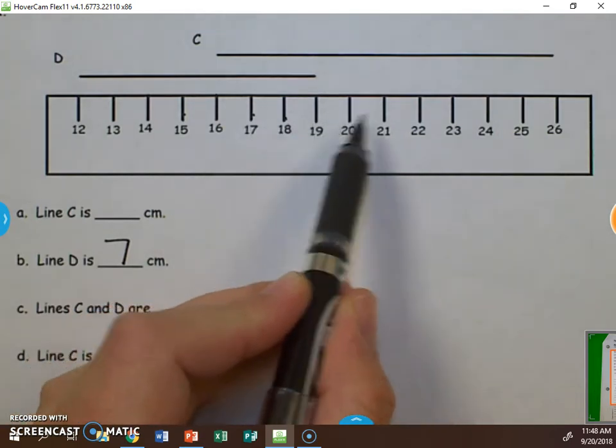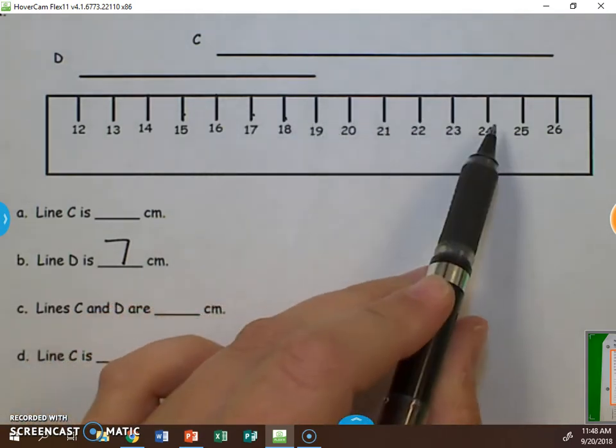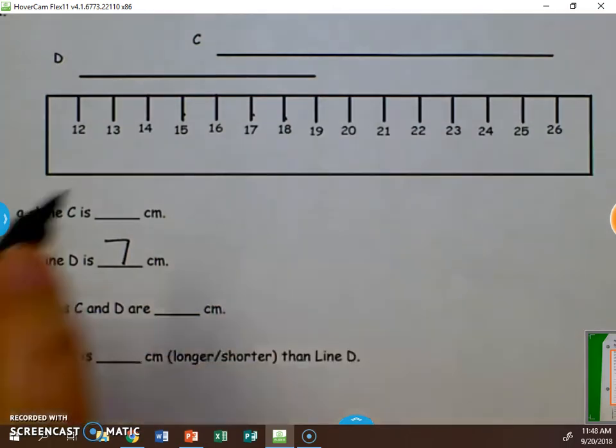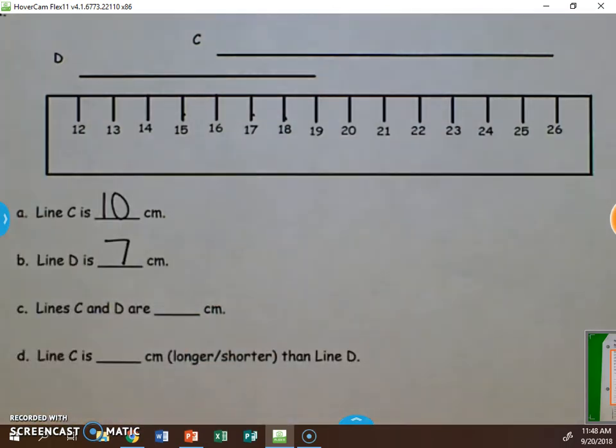One, two, three, four, five, six, seven, eight, nine, ten. Line C is 10 centimeters long. So we'd put the 10 there.